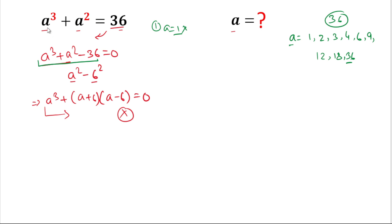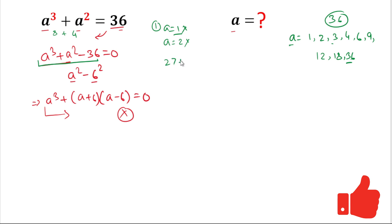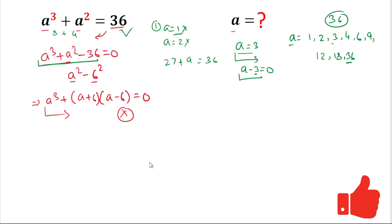Putting a = 2: 2³ = 8, plus 2² = 4, gives 12. This does not satisfy the expression either. Now putting a = 3: 3³ = 27, plus 3² = 9, equals 36. This satisfies the equation! So a = 3 is a solution, meaning (a - 3) is one factor.